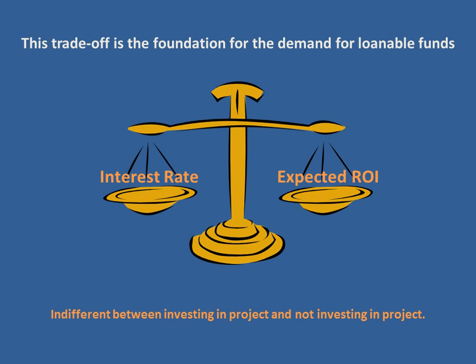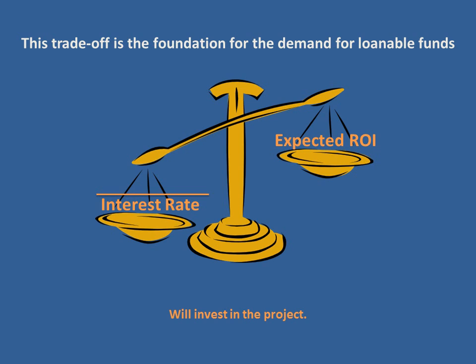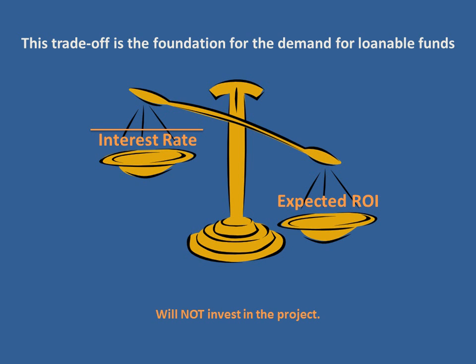Now since we're looking at shifting the demand curve, we're going to keep the interest rate constant and change the expected return on investment to see how the demand curve will shift. Keeping the interest rate constant, the expected return on investment could increase — in that case the firm is definitely going to invest because their expected ROI is greater than the interest rate. The opposite could happen where the expected return on investment decreases, and if that were to happen the expected ROI would be less than the interest rate and firms would not invest in the project.